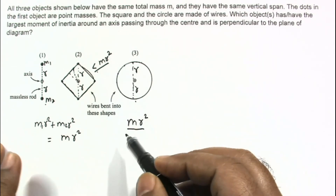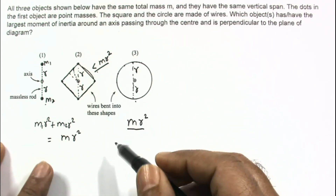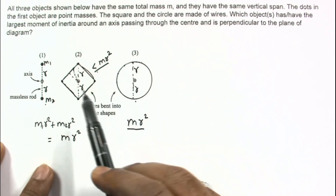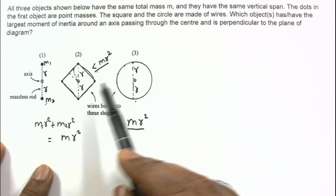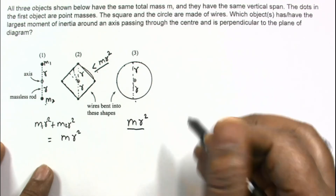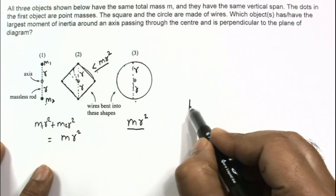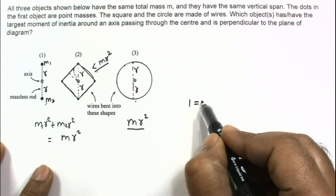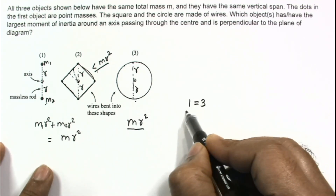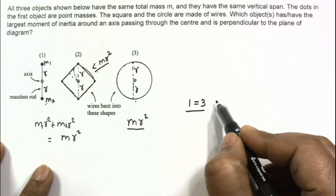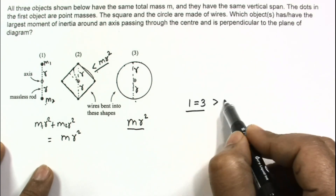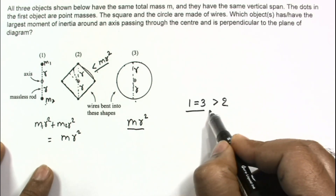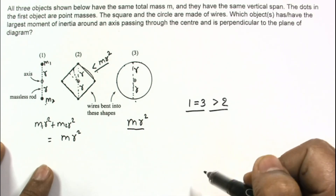So the largest moment of inertia is in the first case and the third case. The first and third are basically equal to M·r², and both are greater than the second case.